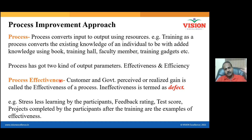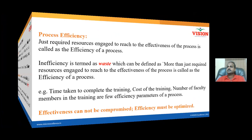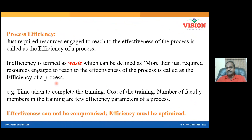This is called process improvement. Process improvement means we either try to improve the effectiveness or we try to improve the efficiency. This is what is called Lean Six Sigma. Focus on improving effectiveness is Six Sigma. Focus on improving efficiency is called Lean. Focusing on both is called Lean Six Sigma, otherwise known as operational excellence. Ineffectiveness is called defect; inefficiency is called waste.